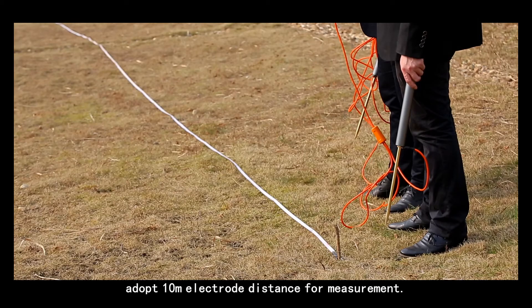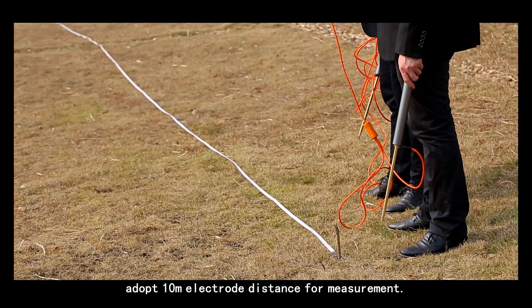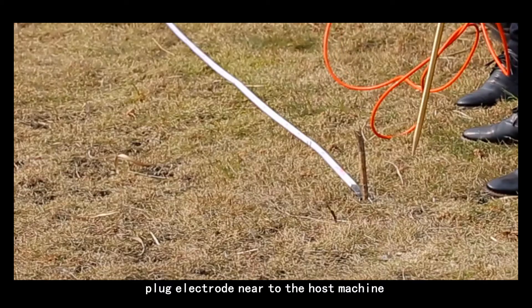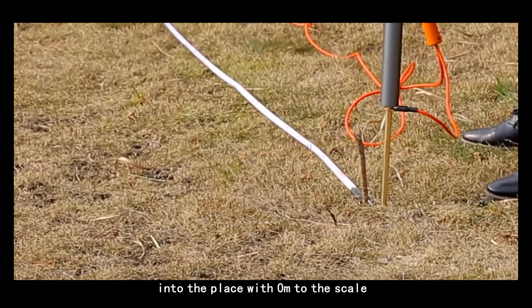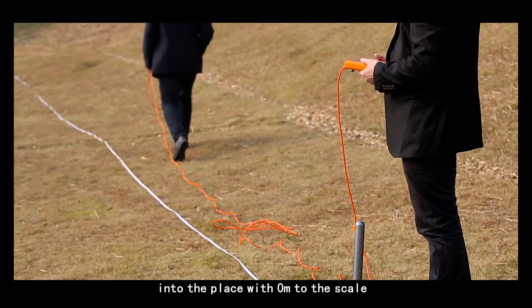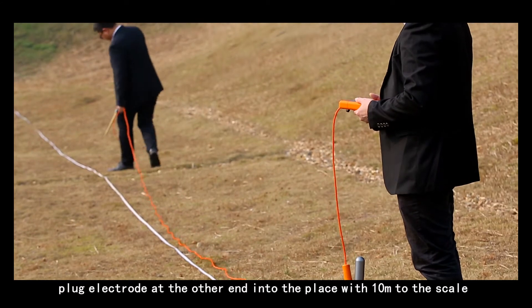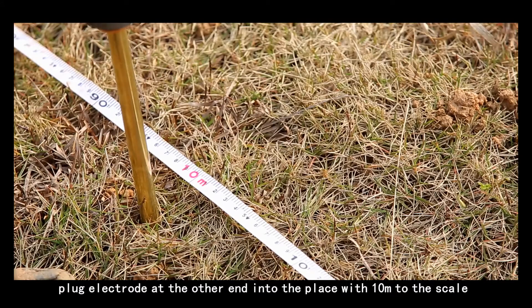In the following, adopt 10 meters electrode distance for measurement. Plug electrode near to the host machine into the place with 0 meters to the scale. Plug electrode at the other end into the place with 10 meters to the scale.